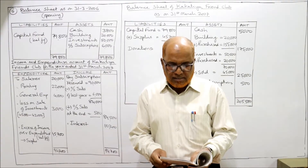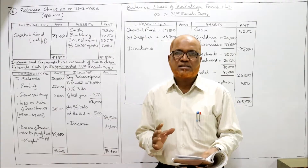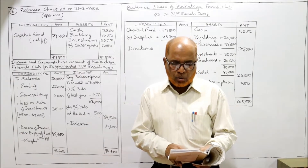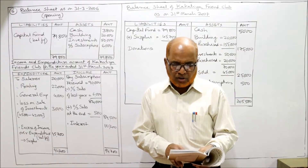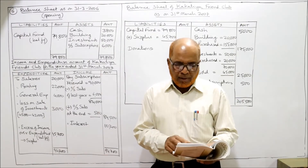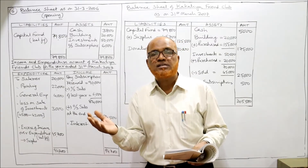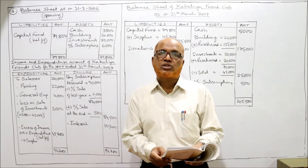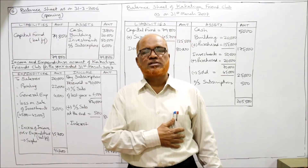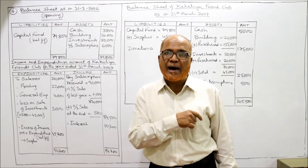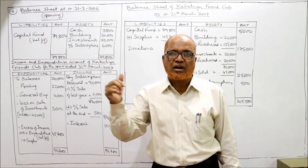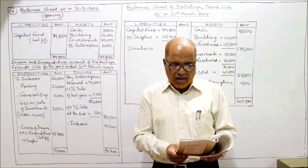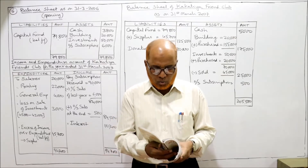The receipts and payments account debit side shows: opening cash balance 3,800; subscription received 90,000; donations 80,000; sale of investment 42,000; interest 10,200. On the payments side: building purchased 1,55,000 and investment purchased 20,000 — both are capital expenditure going to the balance sheet. Printing and general expenses are revenue expenditure, and closing cash balance is 5,000.